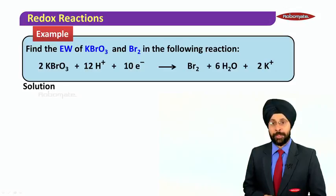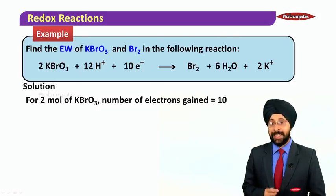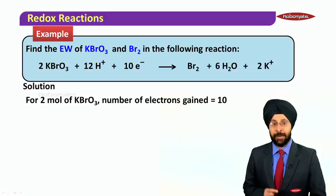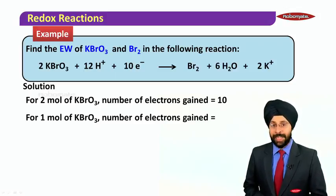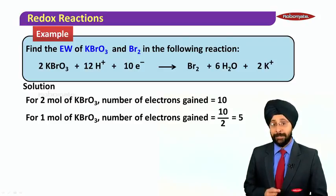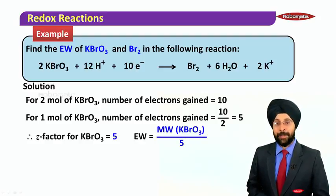Find the equivalent weight of KBrO3 and Br2 in the following reaction. In this reaction 10 electrons are being exchanged. For 2 moles of KBrO3, the number of electrons gained is equal to 10. So for 1 mole of KBrO3, the number of electrons gained will be equal to 10 by 2, that is 5. The Z-factor of KBrO3 becomes 5, and therefore equivalent weight equals molecular weight of KBrO3 divided by 5.